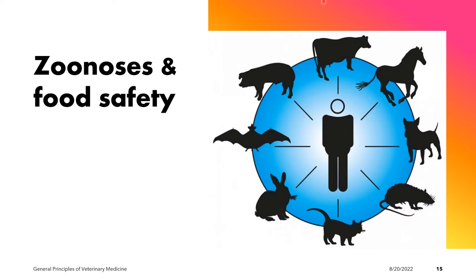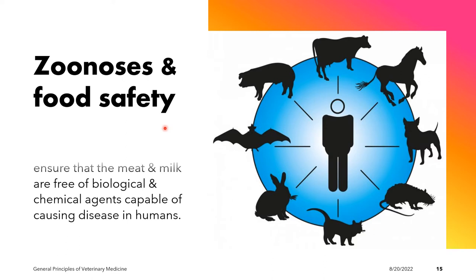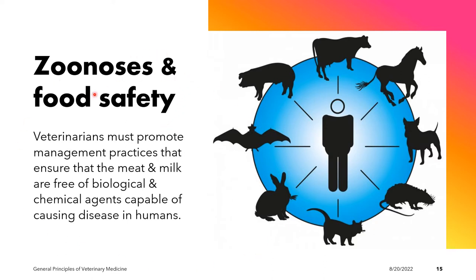The third objective of food producing animal practice is zoonosis and food safety. Zoonoses are infections acquired from animals — infections that occur normally in vertebrate animals and can be passed on to humans who come in contact with the animal. Veterinarians must promote management practices that ensure meat and milk are free of biological and chemical agents capable of causing disease in humans.